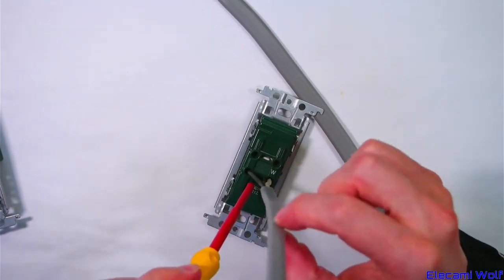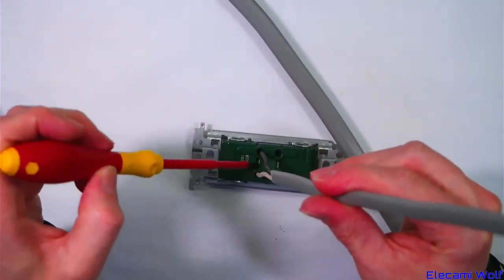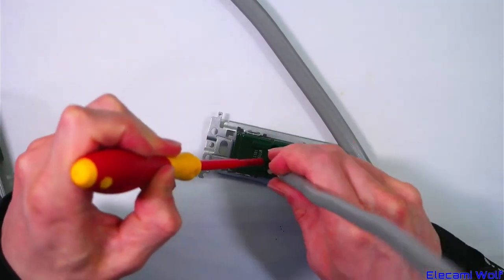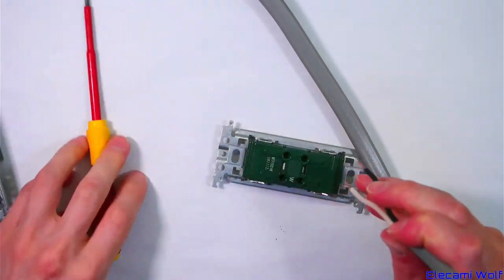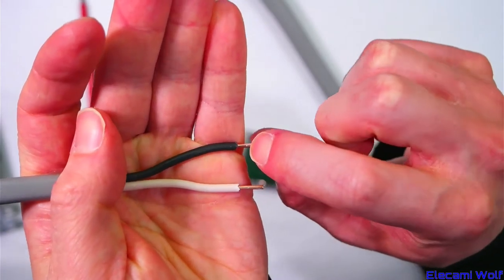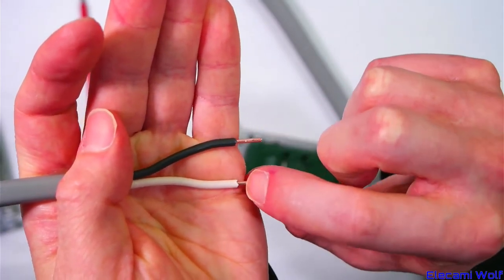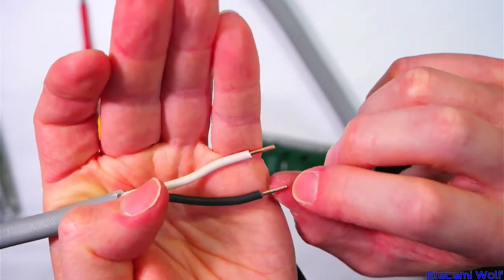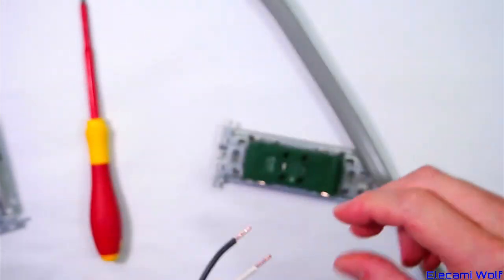Put a screwdriver in that and then the wire slides out easily. And you can see that there are notches in the copper now where the contacts were biting down on it. Pushing in with strong springs.